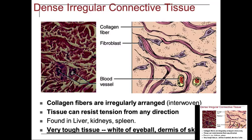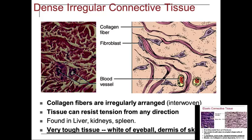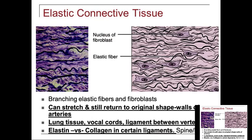Dense irregular connective tissue fibers are irregularly arranged or interwoven. Think of the eyeball — when you rub your eye, you move it in multiple directions and it rebounds back to its original shape. When soft tissue massage manipulates skin and tissues, it doesn't deform — it bounces right back. That's in the dermis of the skin. Elastic connective tissue can stretch yet return to its original shape — found in the walls of arteries, lung tissue, vocal cords, and the ligaments between vertebrae.